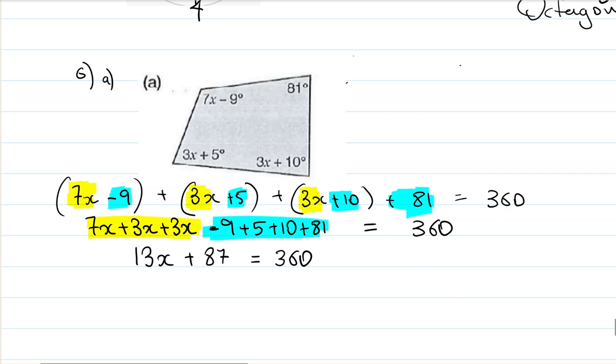Now boys and girls, if I subtract 87 on both sides, 87 there and 87 there, I will get rid of the 87 on the left-hand side of the equation, because positive 87 minus 87 is 0. So 13x, I'll write the 0 there as well, plus 0, equals 360 minus 87, 273.